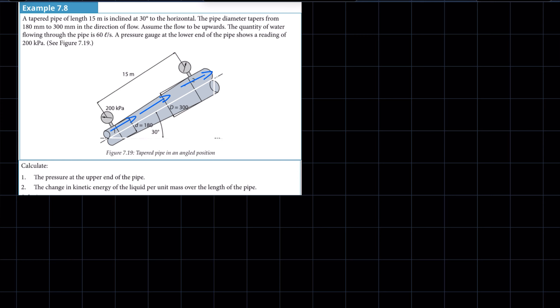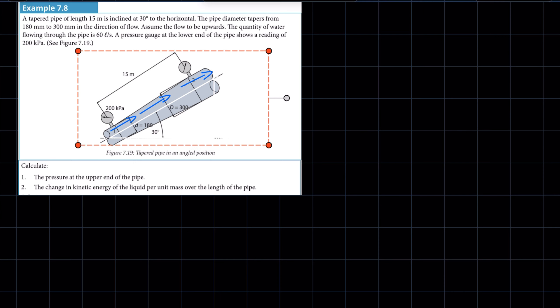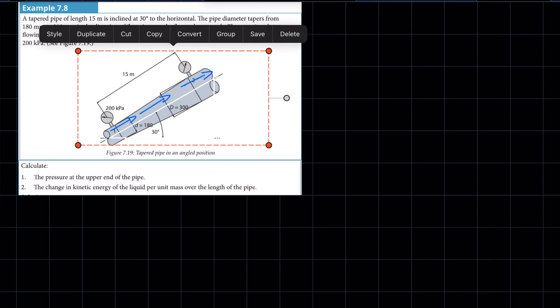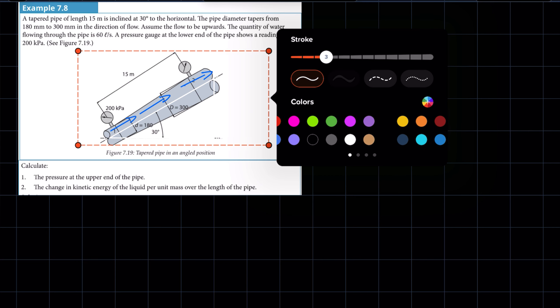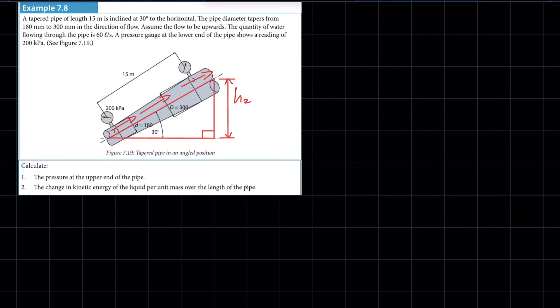Now if you look closely, you have somewhat of a right angle triangle that is formed whenever you look at a pipe that is at an incline. Here's your right angle triangle. The side that is the hypotenuse of the right angle triangle is essentially the length of the pipe, and then we have that angle of 30 degrees, and the side opposite the angle is our h2.